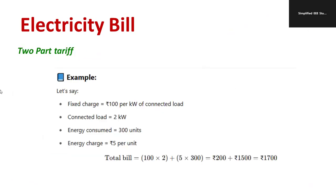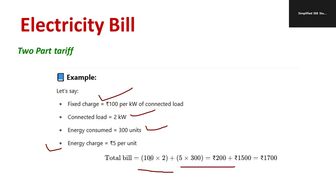Let's look at an example for better understanding. Fixed charge is Rupees 100 per kilowatt, connected load is 2 kilowatt, energy consumption is 300 units, and energy charge is Rupees 5 per unit. Therefore total bill = fixed charge + running charge = 100 × 2 + 5 × 300 = Rupees 200 + Rupees 1500 = Rupees 1700.